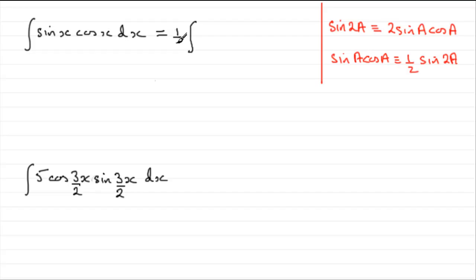Now, I prefer to write constants out the front of an integral. And I'd always encourage anybody to do that because it simplifies what you've got to integrate. So, in this case, we've got to integrate sine 2x with respect to x.